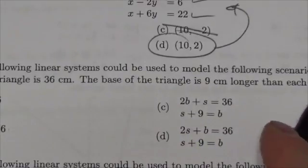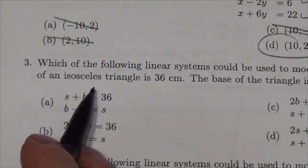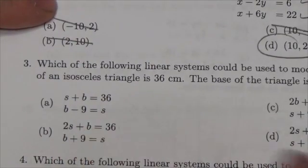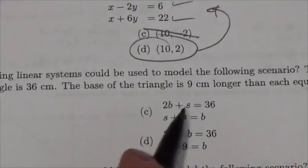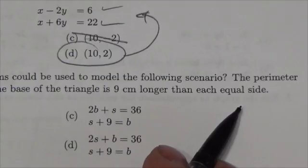So let's just read it out here. It says the perimeter of an isosceles triangle, now let's think what that means. This means two sides are the same, is 36 centimeters. The base of the triangle is nine centimeters longer than each equal side.